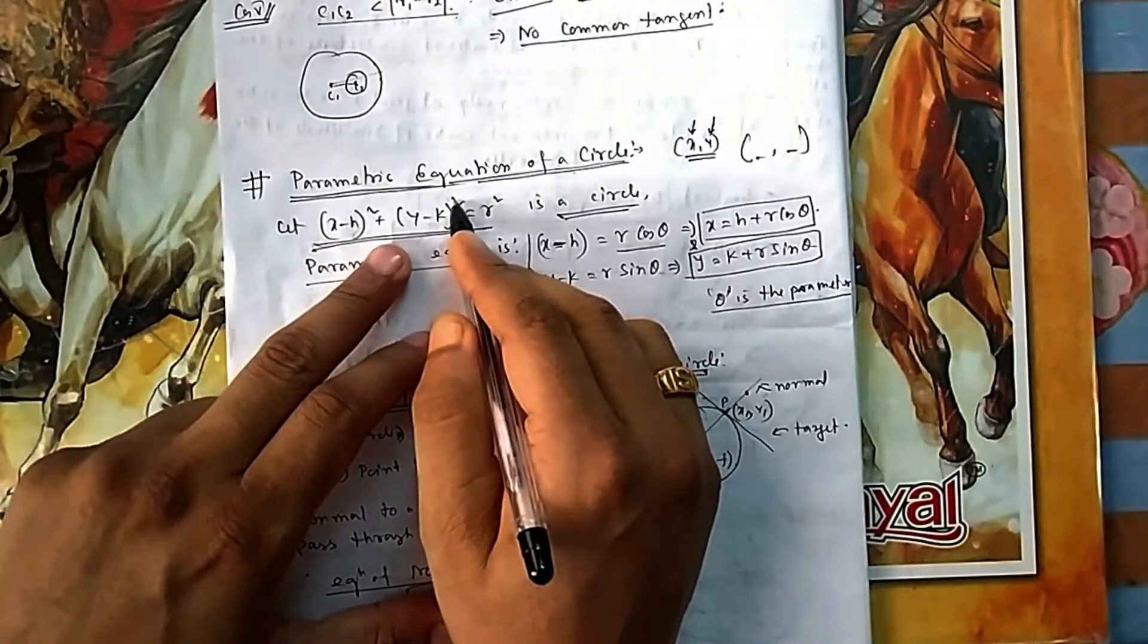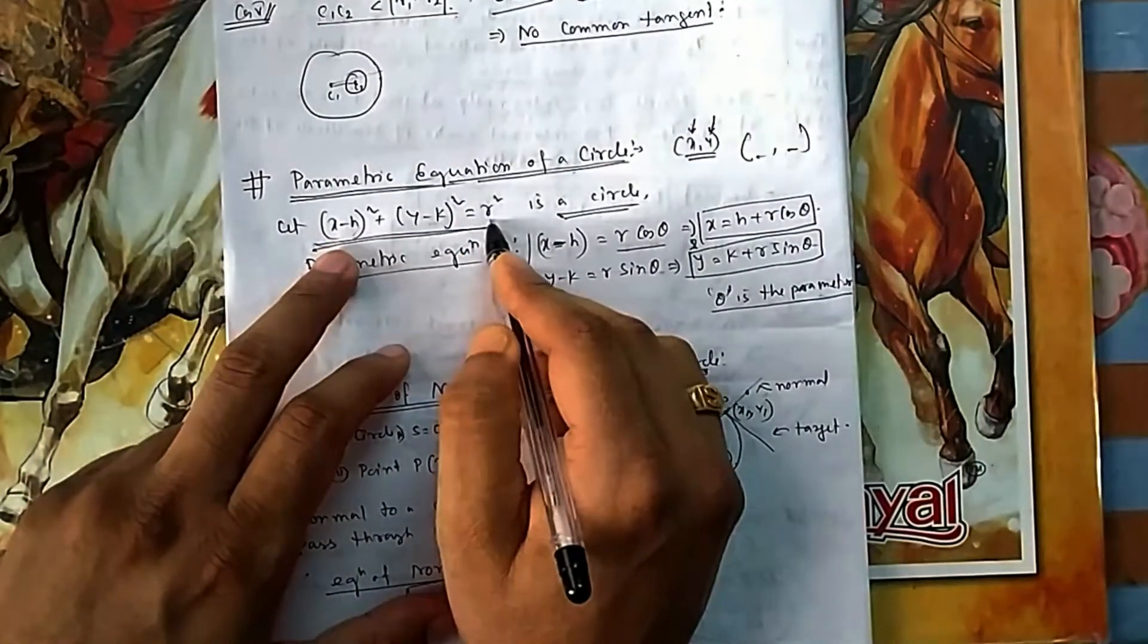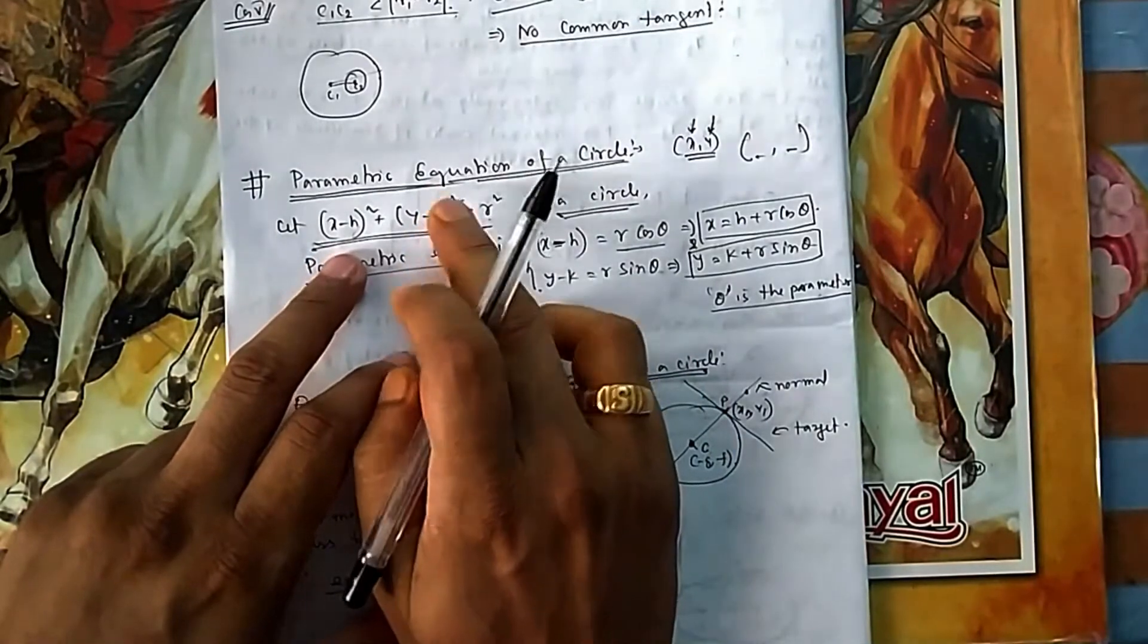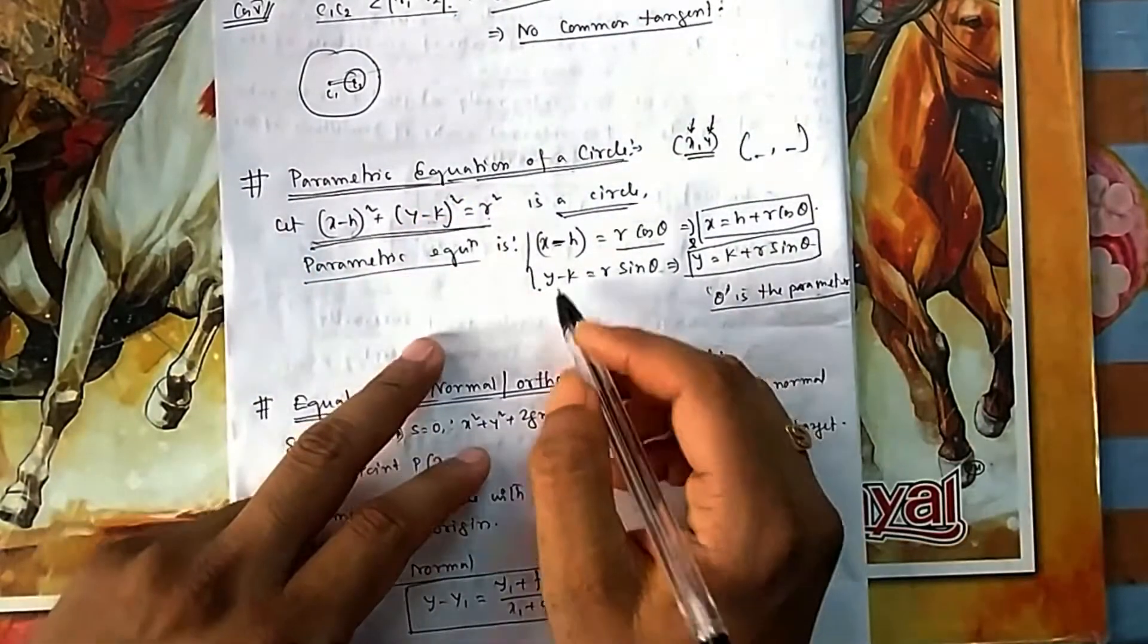Because this has to be satisfied—this is the original equation. If I consider it this way, you can consider different forms also. It could be r sin θ and r cos θ, but it is convention.